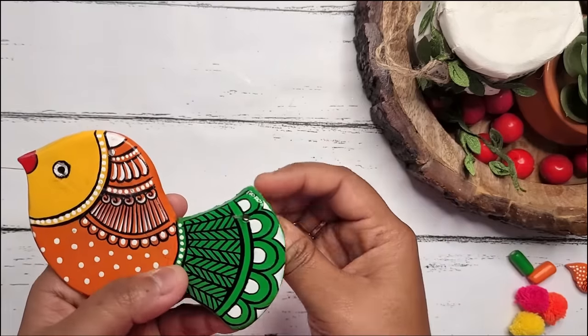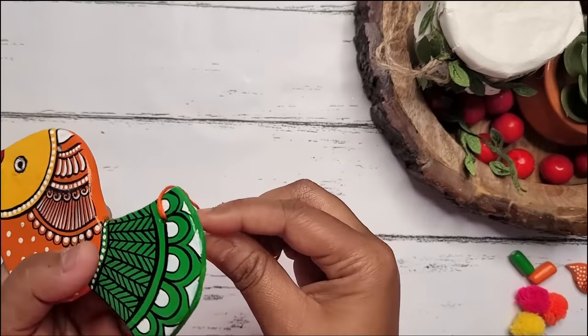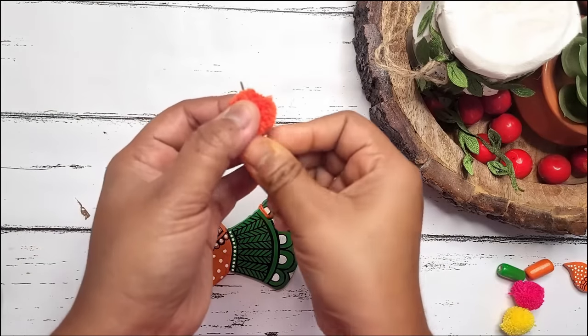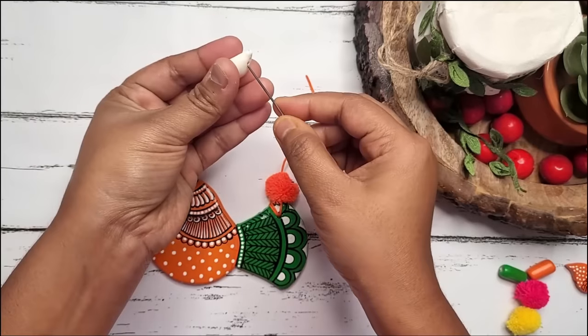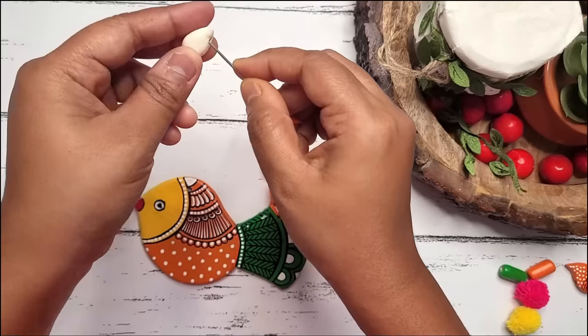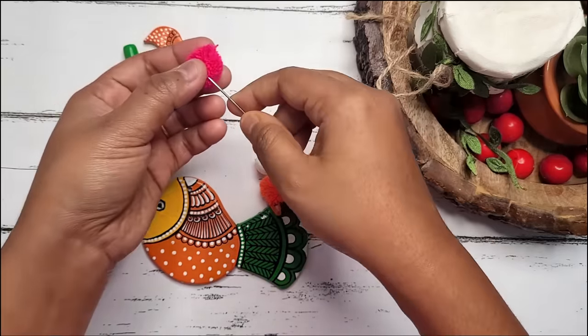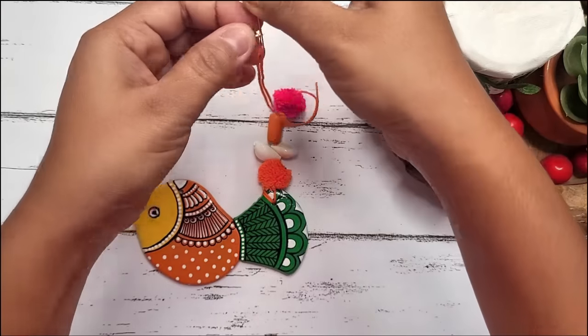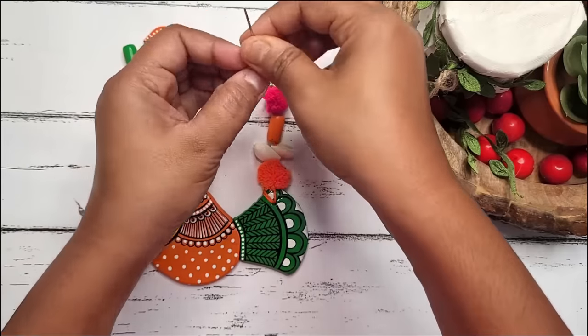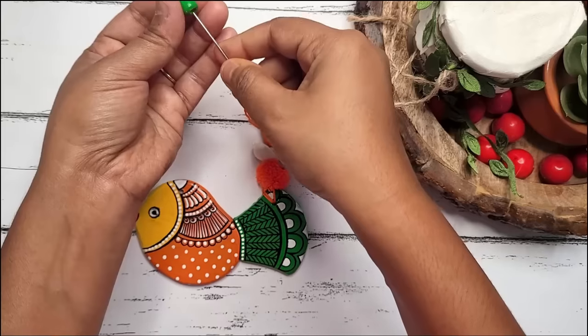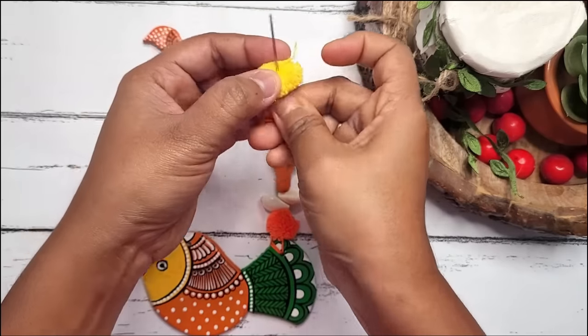These are the handmade beads that I made using air dry clay. Now it's time to stitch everything together. Here I've taken one needle and a cotton thread and now I'll add all the things one by one. First I have added pom pom, then two cowrie shell, then handmade bead, and again pom pom.